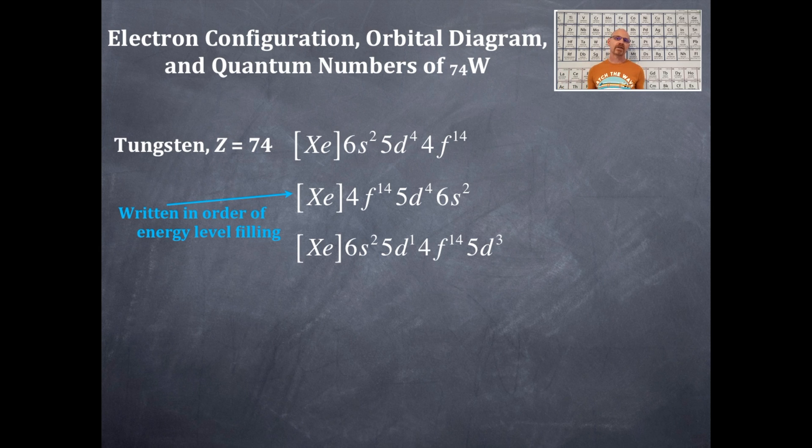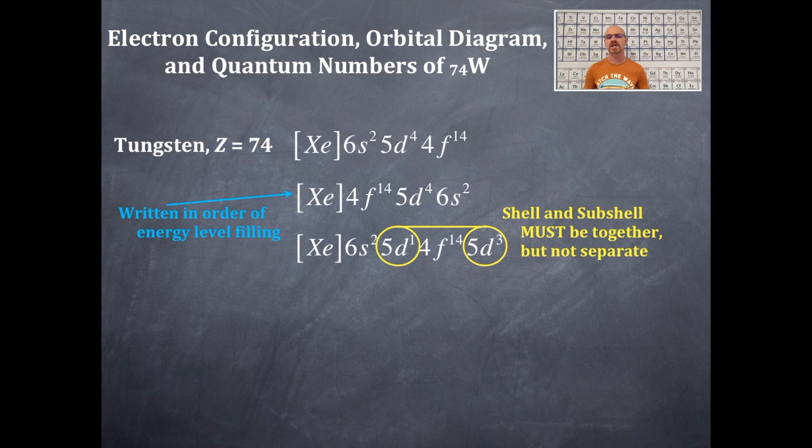You look at this one here. Now, I've seen this many times from students in this same fashion, and I'm going to circle two things here. See the 5d and the 5d? When you write it out, when you walk it through here on the periodic table, it's 6s1, 6s2, then 5d1, then 4f 1, 2, 3, 4, 5, 6, 7, 8, 9, 10, 11, 12, 13, 14.